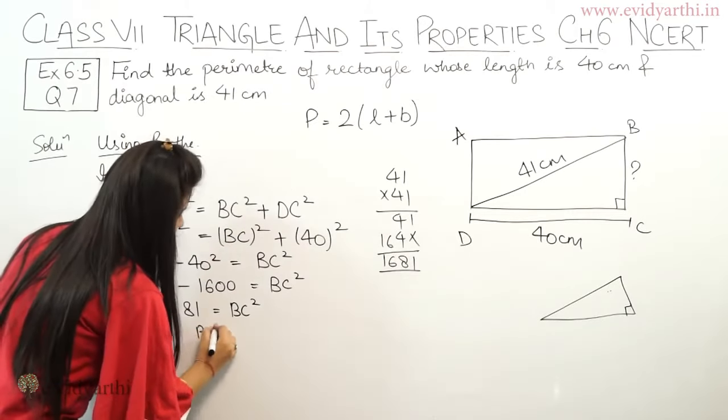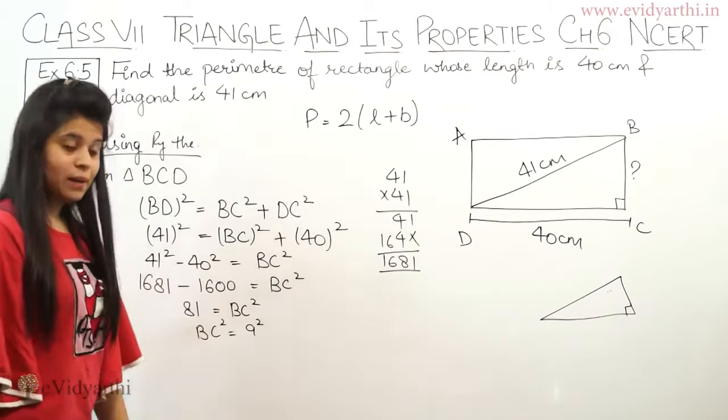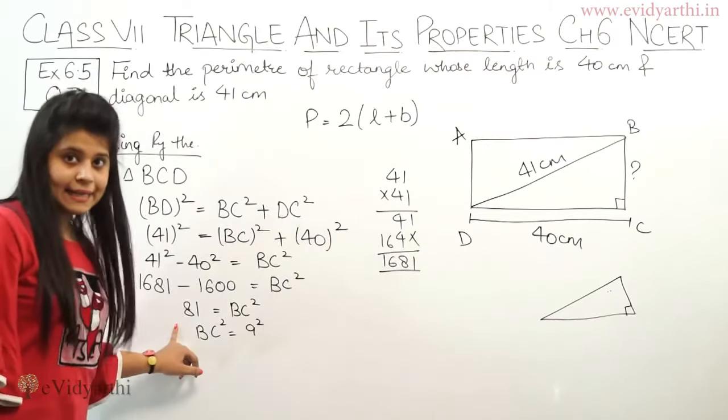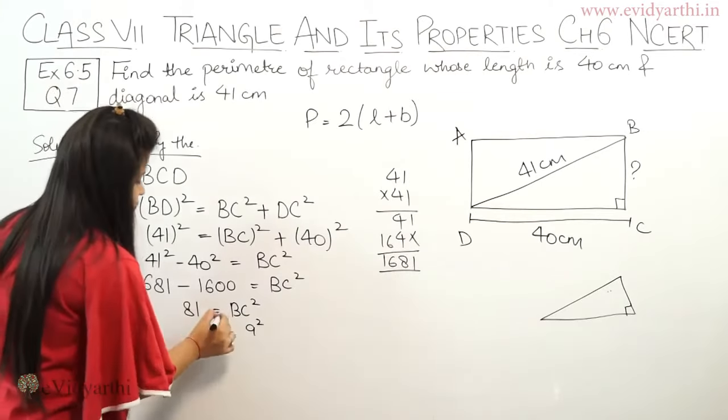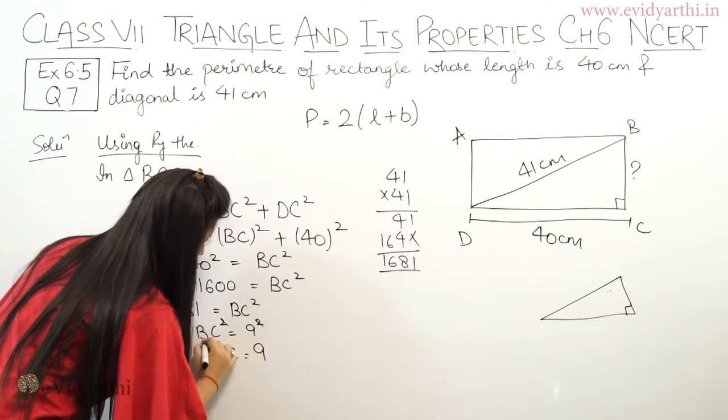Now we subtract: 1681 minus 1600 will be 81. So 81 equals BC². We can find BC: BC² equals 9² because 9 times 9 is 81. Squares are cancelled. Now BC equals 9.